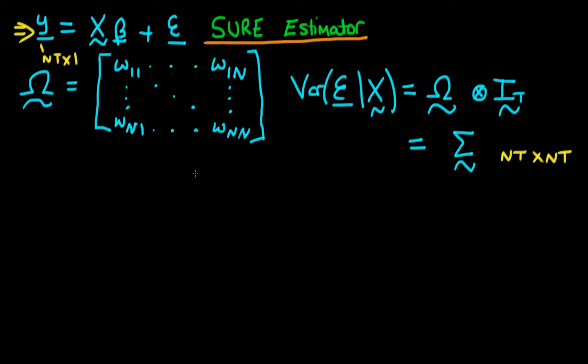So we're in this video going to derive the GLS estimator for SURE systems, which is abbreviated as the SURE estimator. So as with all GLS estimators, essentially what we do is we take some sort of linear transformation of both sides of our system.